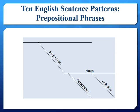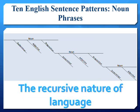The preposition is written on the slanted line, and determiners, adjectives, and adverbs are written on slanted lines under the noun, just like prepositions, because prepositions, determiners, adjectives, and adverbs modify words that are nouns and verbs. Prepositional phrases can infinitely follow one another, just as the line diagram shows. This is the recursive nature of language.